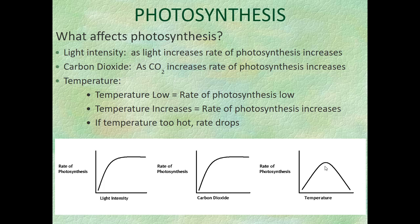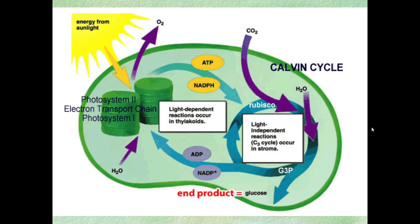At very high temperatures photosynthesis decreases and can be damaged. At very low temperatures it also stops. So there's a range of temperatures in which photosynthesis can occur. This is caused by enzymes — the proteins that regulate all these chemical reactions. Enzymes work better when warm, so at low temperatures they don't function well. But at too high a temperature they also fail. Enzymes have a temperature range they prefer, which is why photosynthesis only occurs within a specific temperature range.